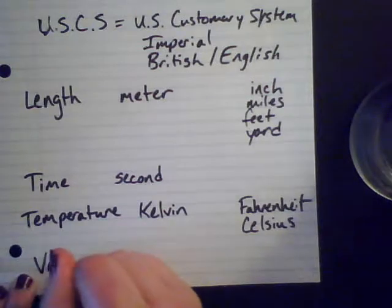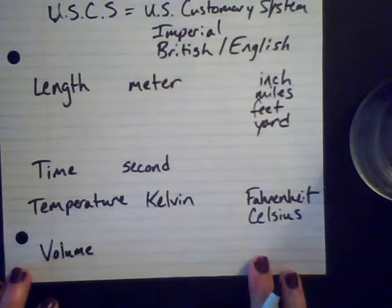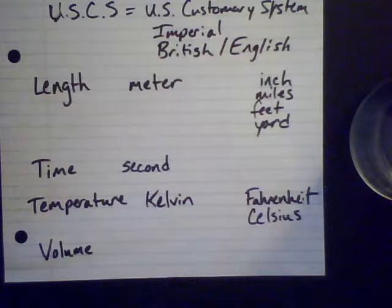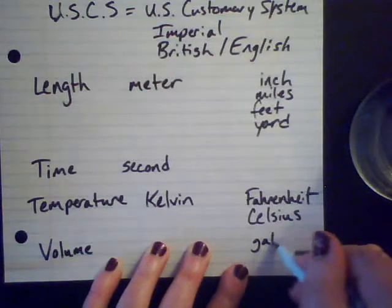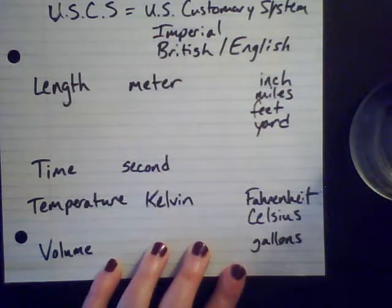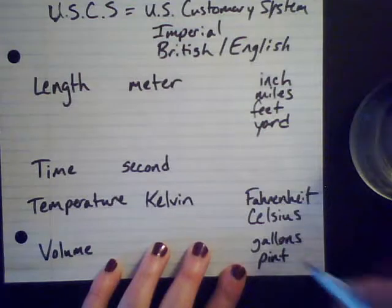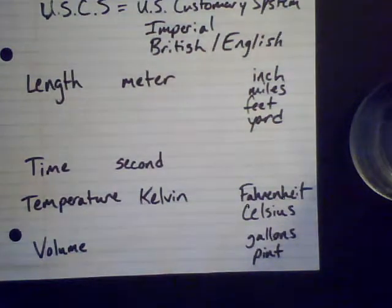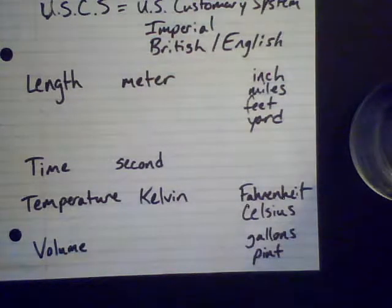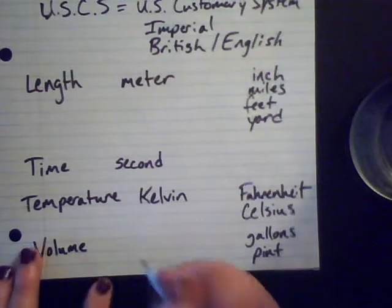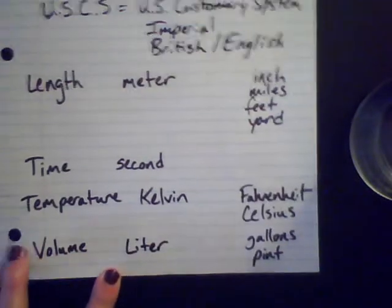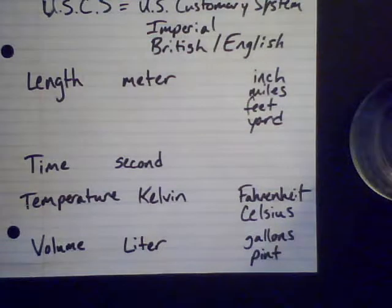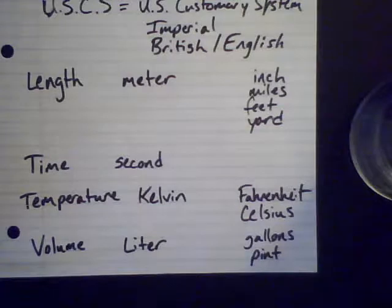For volume — how much space something takes up — we in the U.S. think about gallons or pints. Those are all imperial or British units. But we actually know a bit about SI units for volume already, because we have two-liter bottles of soda. The liter is our SI unit for volume, abbreviated with a capital L. Two liters is two times the base SI unit.